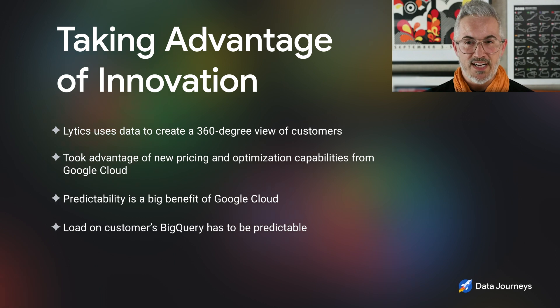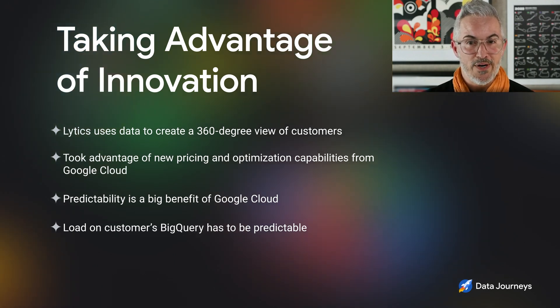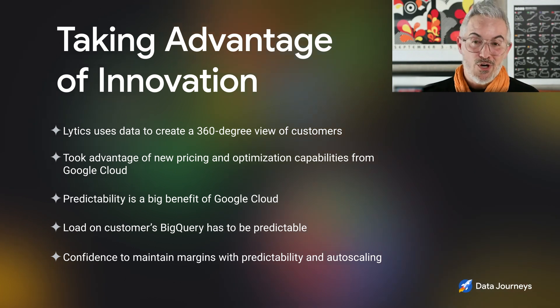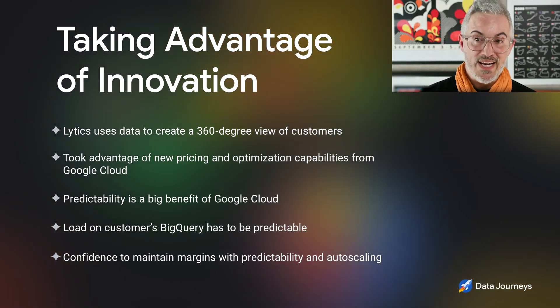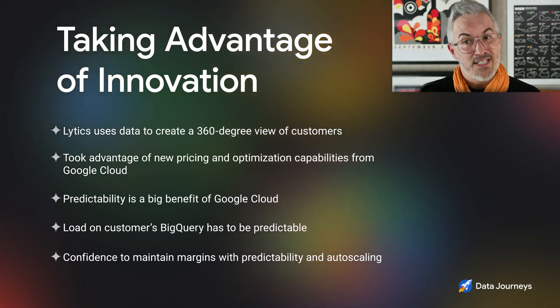What I mean by that is that our business in particular — the load that Lytics places on our customers' BigQuery — has to be predictable. And historically, that's actually not always been the case for us. As an ISV, it is unbelievably important for our business to be able to run and scale the way they would need to, especially in the verticals that we sell to, like CPG, media and entertainment, and banking. When BigQuery is more compatible with those enterprises and we understand how to be predictable and scale with them, it helps us win new business — we have confidence that we're going to be able to maintain the margin that we care about. Pricing and predictability — you've got to have it. It's an enterprise requirement.